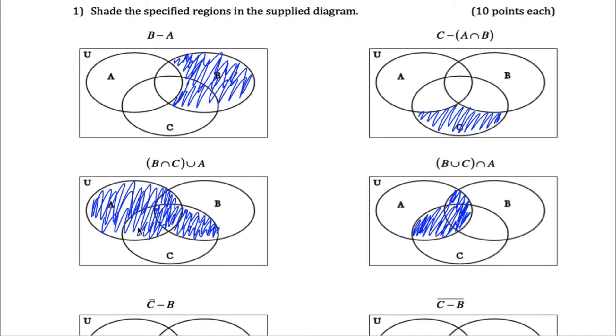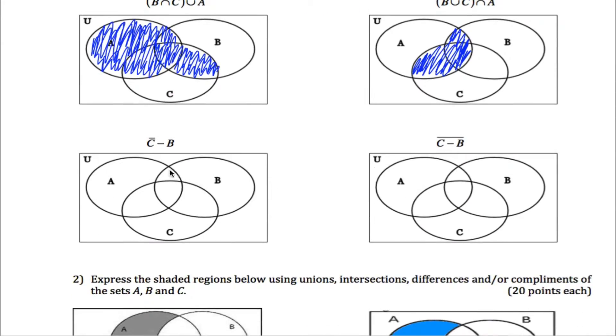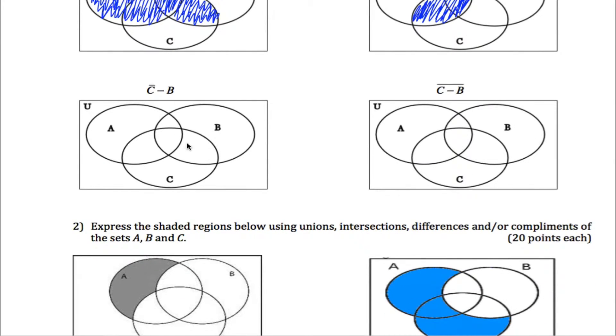Moving on. I don't know why I'm shading these in more, but here we are. So C complement, take away B, that's pretty tricky. C complement is everything that's not in C. So picture the entire diagram except for this circle right here. Everything outside of this circle, all this stuff, the outside area here.